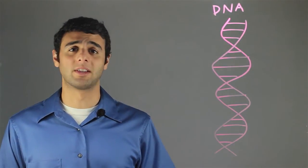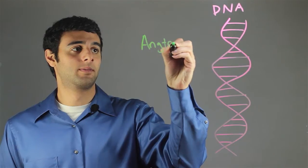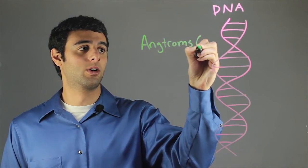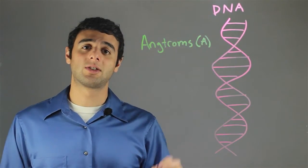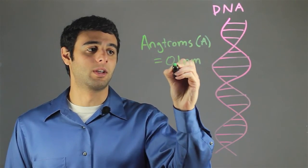When talking about the size of a DNA helix, we typically use angstroms, or A. Angstroms are equal to 0.1 nanometers.